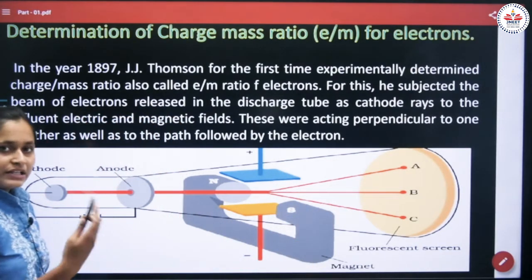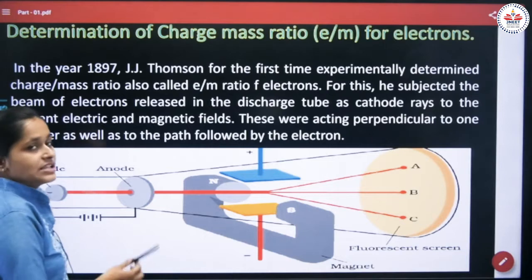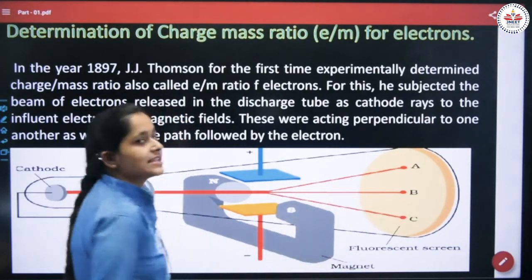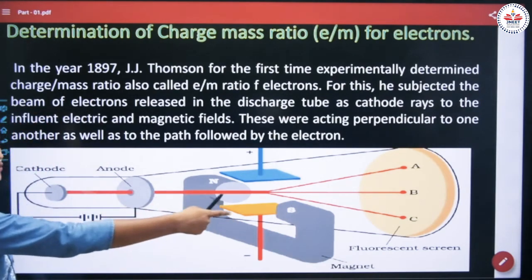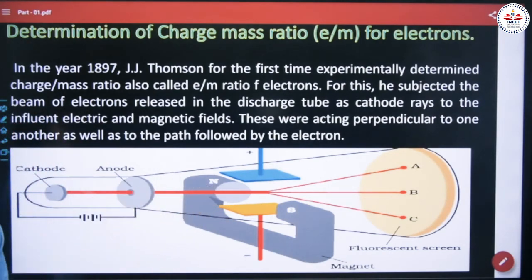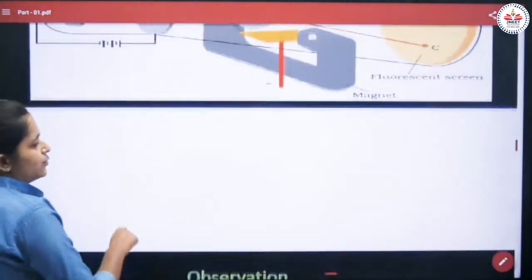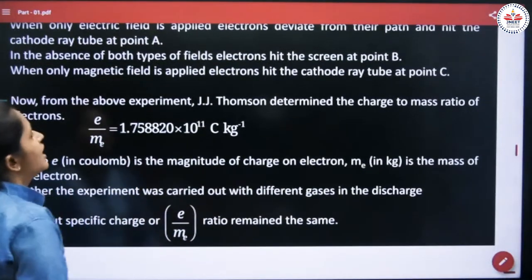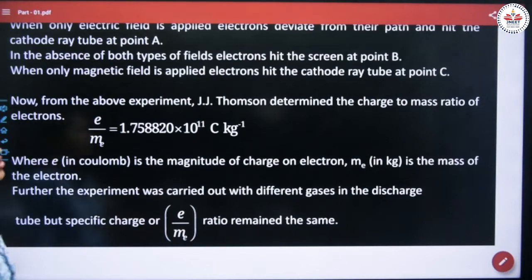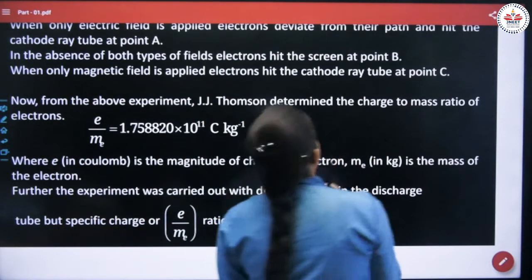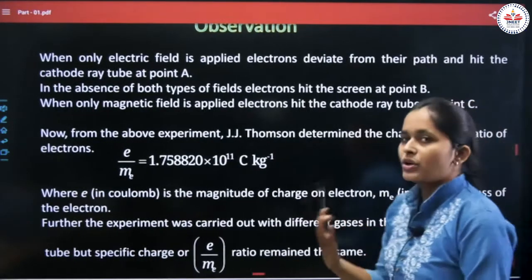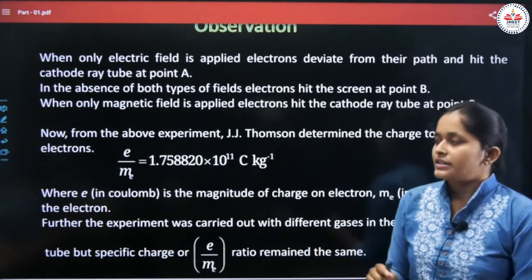At point B, and when only the magnetic field is applied, the cathode rays deflect to the other side and strike the fluorescent screen at point C. From these three observations, J.J. Thomson determined the charge to mass ratio through calculation.